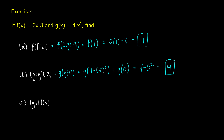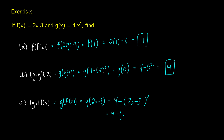We can also compose the functions algebraically. For g of f of x, f of x is 2x minus 3, so wherever we see x in g we replace it with 2x minus 3. So it's 4 minus the quantity 2x minus 3 squared. Expanding, we get 4 minus 4x squared minus 12x plus 9, which simplifies to negative 4x squared plus 12x minus 5.